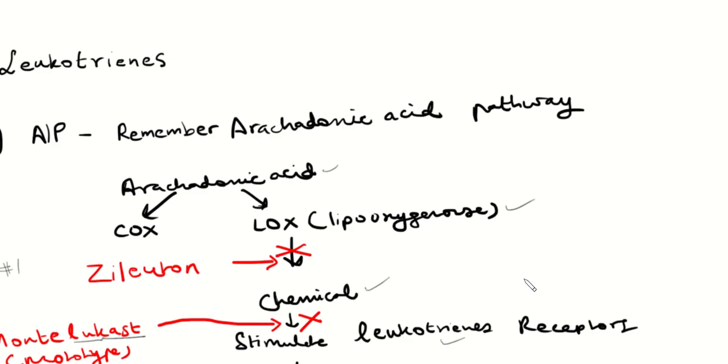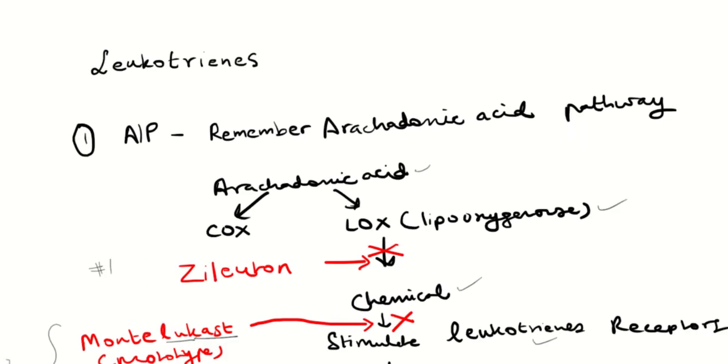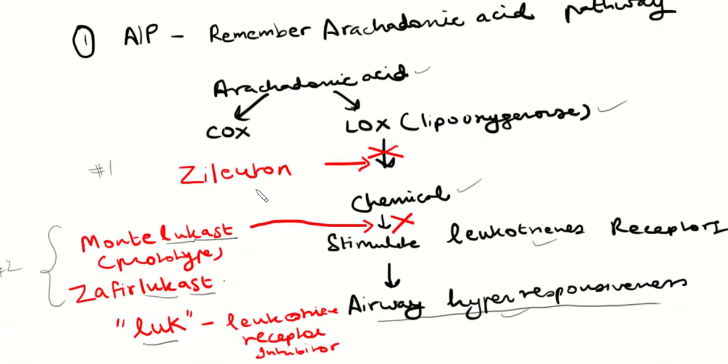So I'll just do a quick recap. So leukotrienes with A&P. These drugs, there's two subcategories of drugs. There's drugs that prevent lipooxygenase from making a chemical from the arachidonic acid. So that's zileuton. And then the other category is the leukast, leukotriene receptor antagonist drugs. Montelukast and zafirlukast. Montelukast is a prototype. This is where the chemical is there, it just prevents that chemical from stimulating leukotriene receptors.